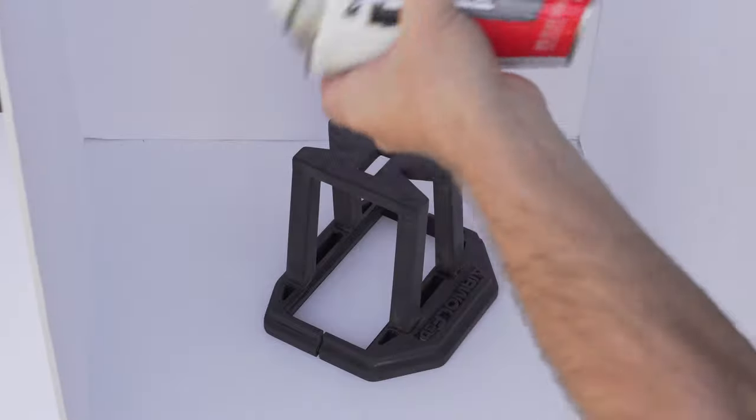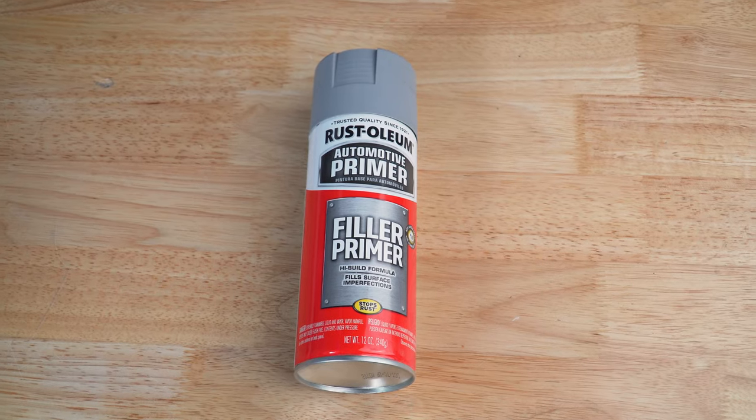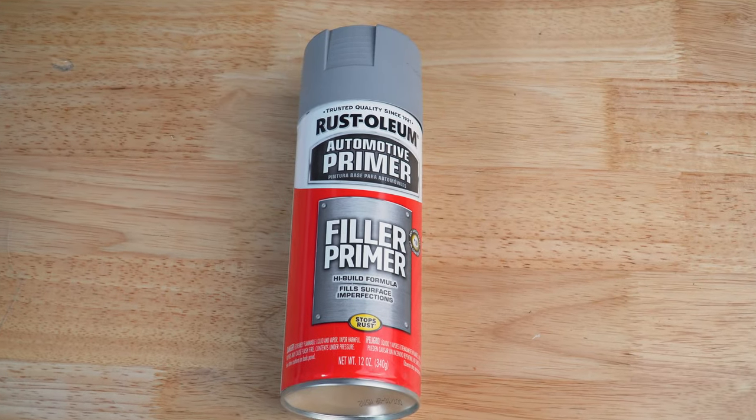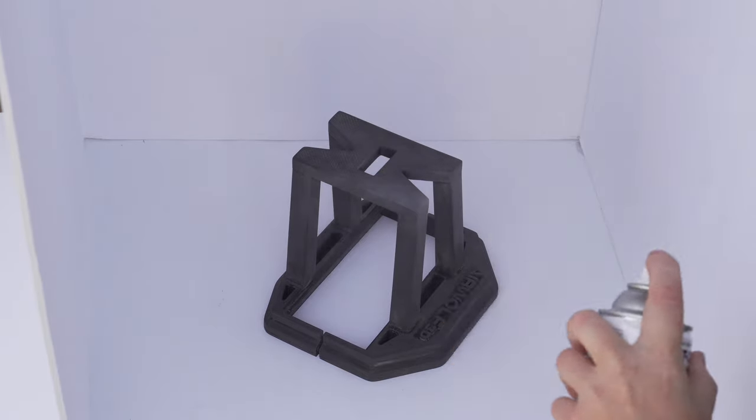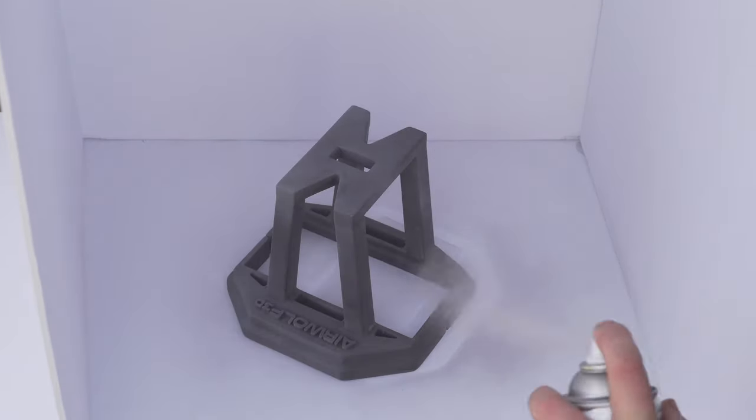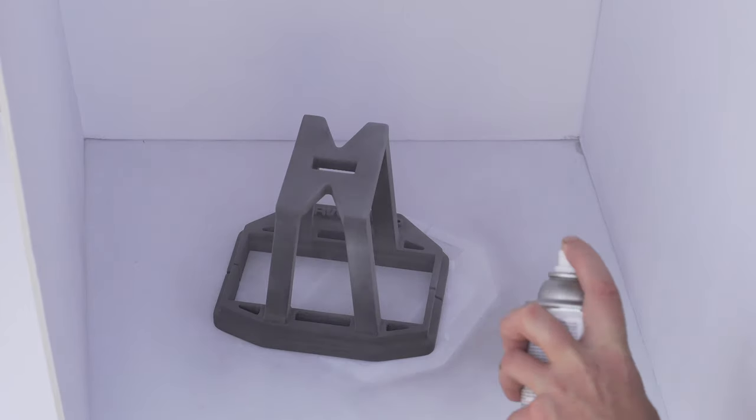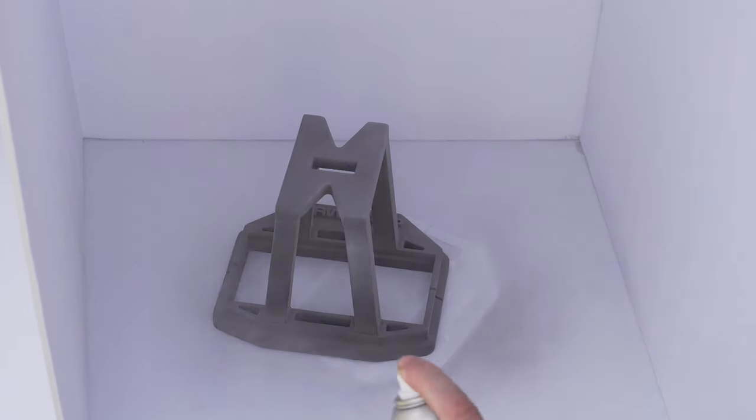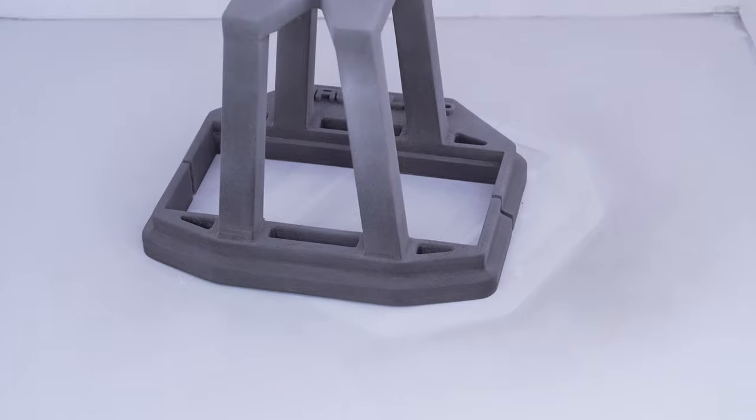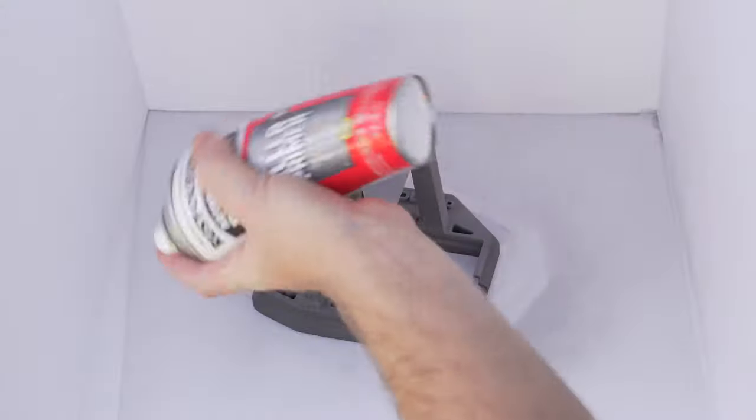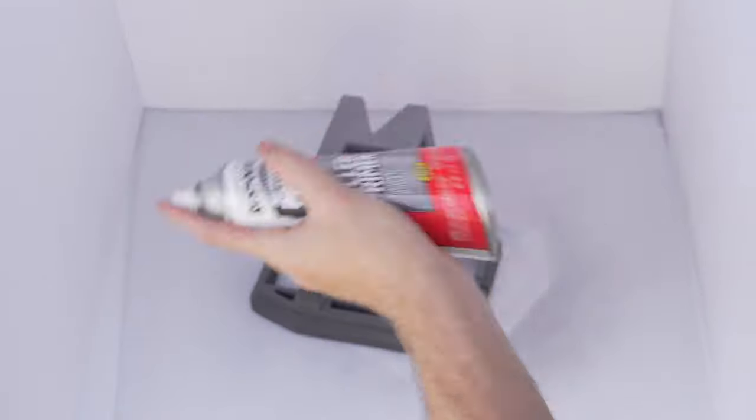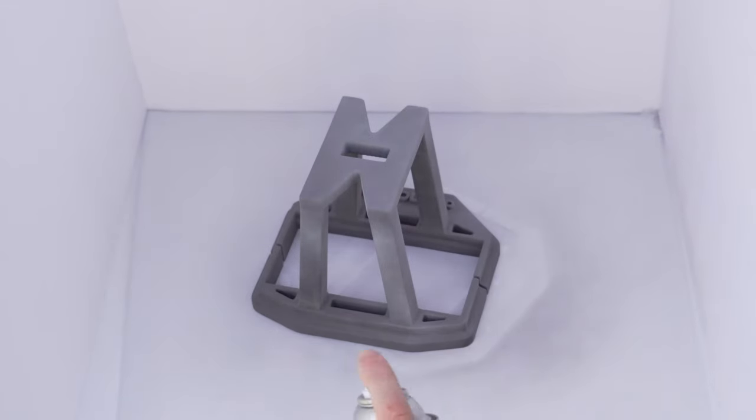Shake the primer can several times. This is very important. Filler primer contains a small amount of filler in order to help further with hiding blemishes. If the can is not shaken enough, these fillers can clog the nozzle and come out in thick clumps on the part. Start off with small, even strokes from about 10 to 12 inches away from the part. You want to do several thin coats in order to prevent dripping and to achieve even paint thickness. Make sure to rotate the model in order to prevent inconsistencies. It is also very important to wait until each coat is dry before adding another.